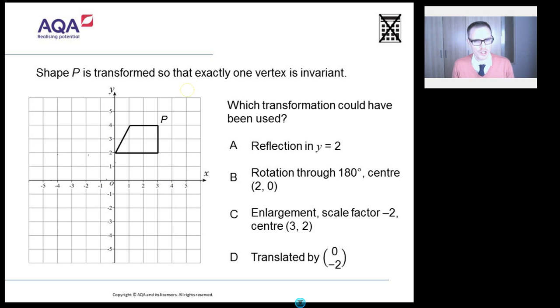This question has been kindly provided by AQA. So shape P is transformed so that exactly one vertex - I'm going to need to highlight that - is invariant. Flipping heck, loads of words bombing around here. So first thing, before we get on to our brand new word, what's that mean? Vertex.